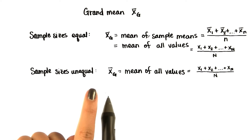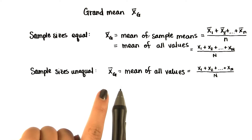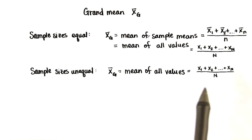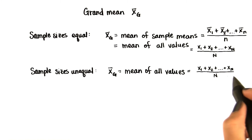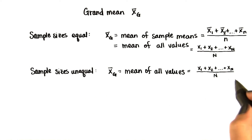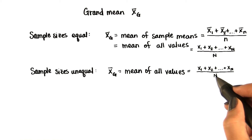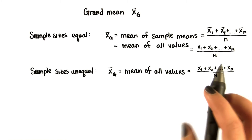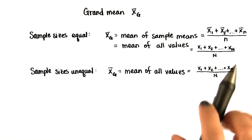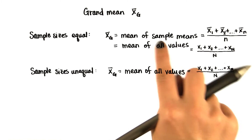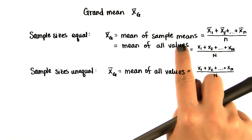But when the sample sizes are unequal, we can't use the mean of sample means. We have to add all the values in all the samples and divide by the total number — the sum of the sample sizes. But in this lesson, we'll only work with samples of the same size, so it's fine to use the mean of means.